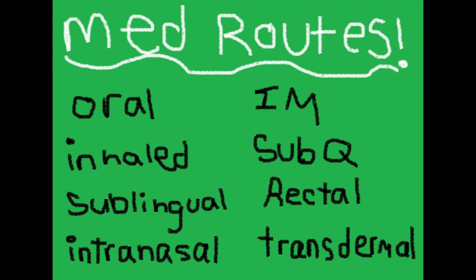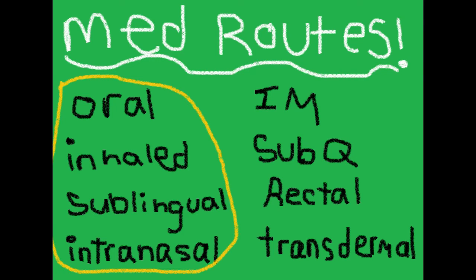The next topic is medication routes. The routes on this list are oral, inhaled, sublingual, intranasal, intramuscular, subcutaneous, rectal, and transdermal. But oral, inhaled, sublingual, and intranasal are what you're probably going to be mostly using as an EMT. Things are always changing and they might be adding more medications in your state, but for the most part, those are the four main routes.